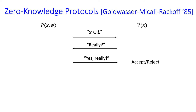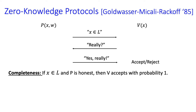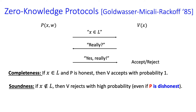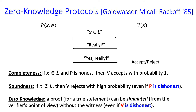More formally, the protocol should be complete: if the statement is true and the prover is honest, then the verifier should accept. It should be sound: if the statement is false, then even if the prover is dishonest, the verifier should reject. And it should be zero-knowledge: the verifier's view in an interaction should be simulatable without knowing the witness W, even if the verifier is behaving dishonestly. This captures the notion that the proof doesn't reveal any information about the witness.